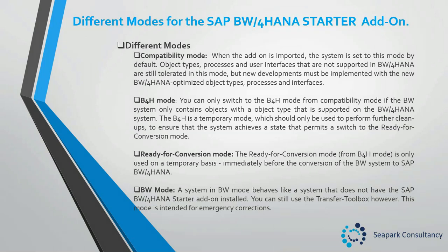The next mode is the ready for conversion mode. The ready for conversion mode from B4H mode is only used on a temporary basis, immediately before the conversion of the BW system to a BW4HANA system. And the last is the BW mode. A system in BW mode behaves like a system that does not have the BW4HANA starter add-on installed. This means that you can create object types, for example an InfoCube, that is not supported on the BW4HANA system. You can still use the transfer toolbox. However, this mode is intended for emergency corrections only.